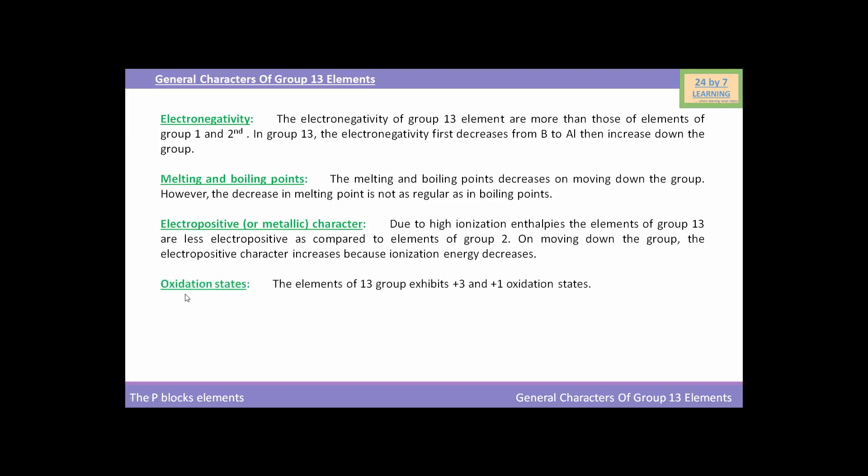Now, we will see the oxidation states. The elements of group 13 exhibit +3 and +1 oxidation states. Boron shows only +3 oxidation state in its compounds. Except boron, the other elements also show +1 oxidation state. The +1 oxidation state becomes more stable as we move down the group from aluminum to thallium. Here you can see, aluminum has least oxidation state while thallium will have highest oxidation state.